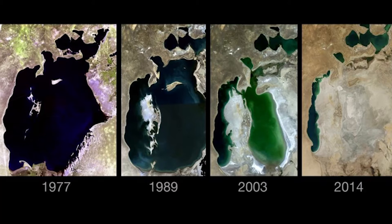The impact of human water withdrawals has already been devastating around the world. For example, the Aral Sea in Central Asia — the rivers feeding it were diverted for agricultural purposes and it's dried up. The cities around it, the economies based on it, are gone. This was the fourth largest freshwater lake in the world.